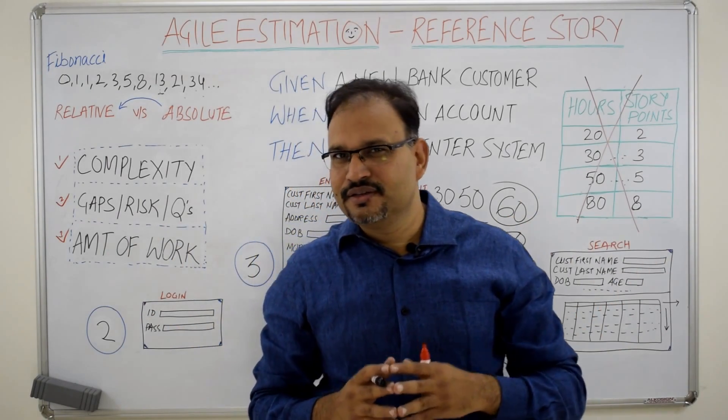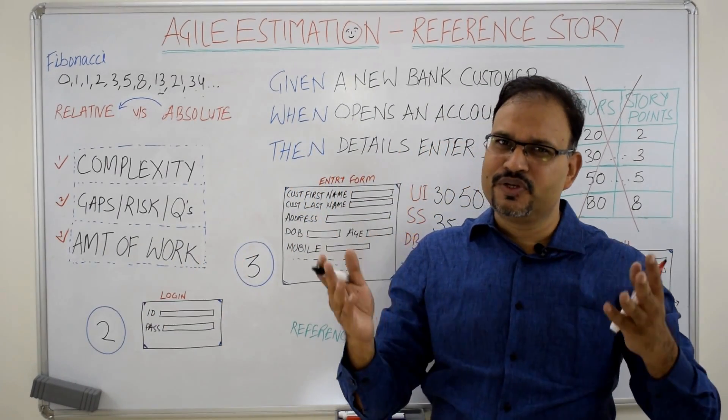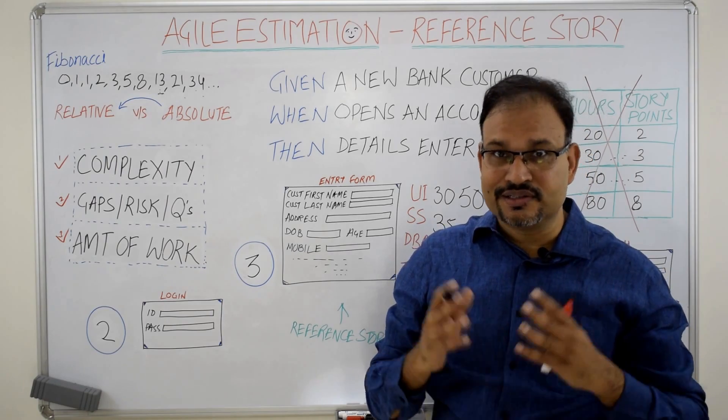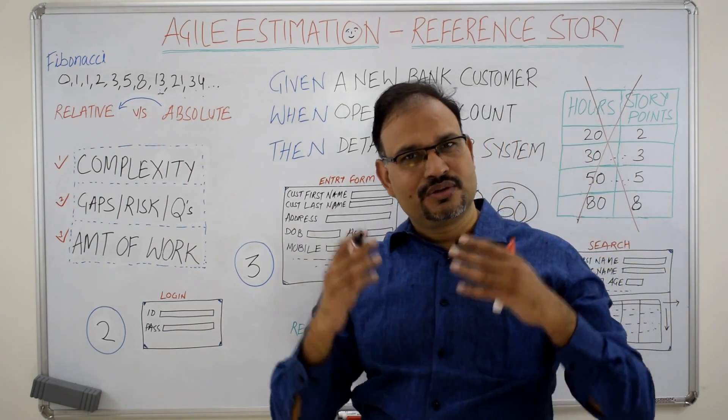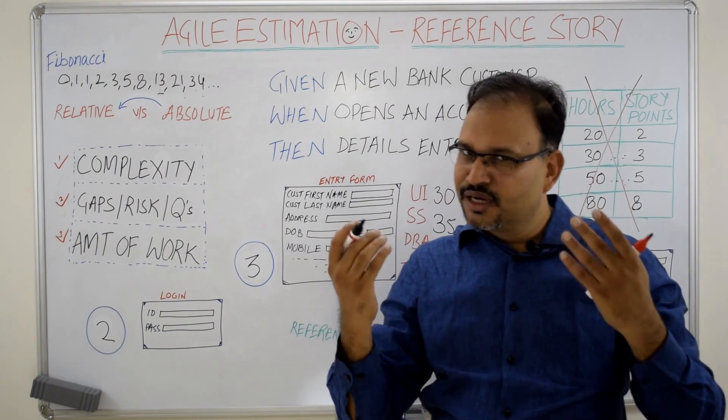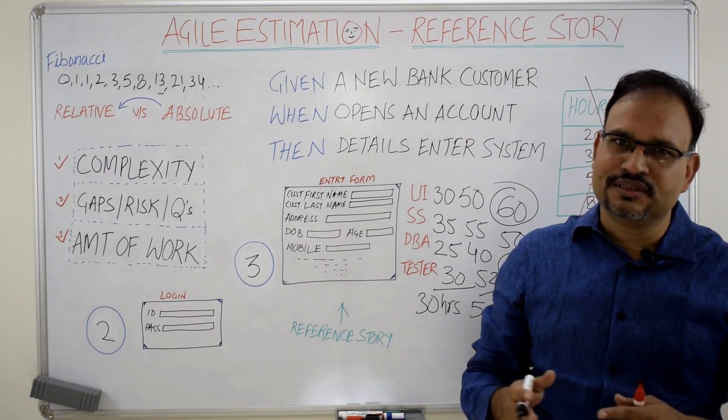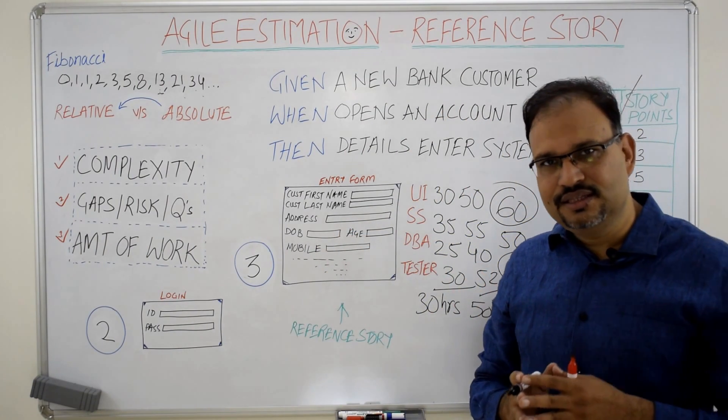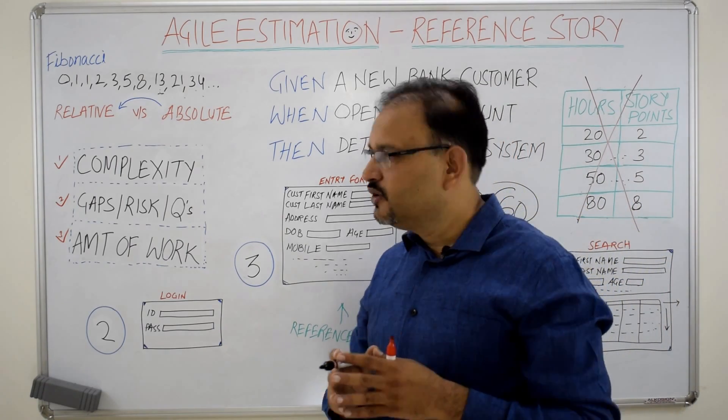Whatever the stories I discussed here, they are more or less simple stories. There may be a story which is a complex story, a story which is making a call to the third party system, getting the data from there, coming back to our system and processing the logic. In that case, this story is going to assign story point of 13.